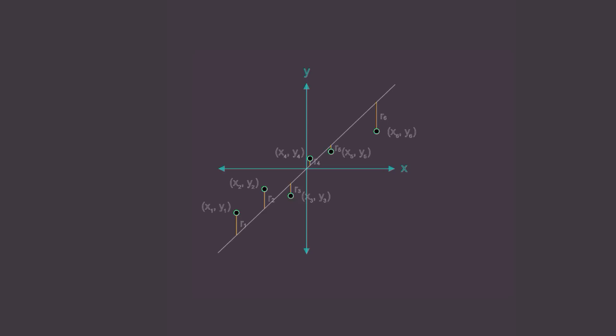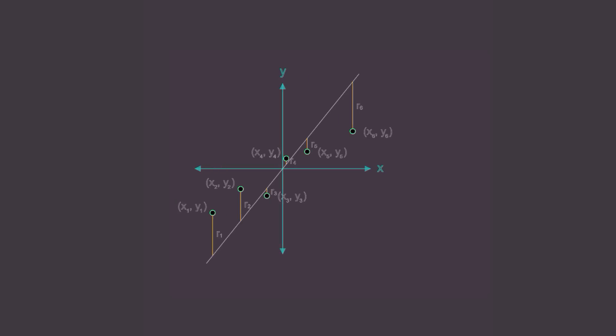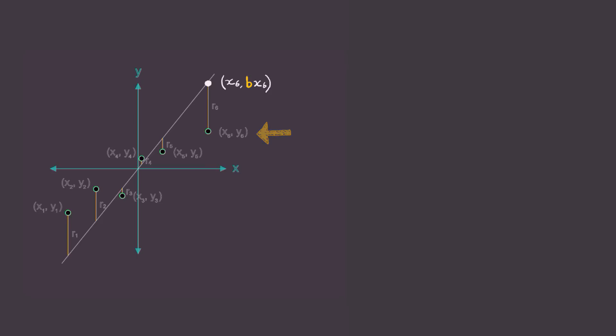And we'll call the residual length of these lines r1, r2, r3, r4, r5, and r6. The residual length associated with this point, for example, is found by subtracting the y-coordinate of the function, in this case b times x6, from the y-coordinate of the data point, y6. So that means r6 is equal to b times x6 minus y6. That's the length of this line. This can be done for all of the data points, like so.